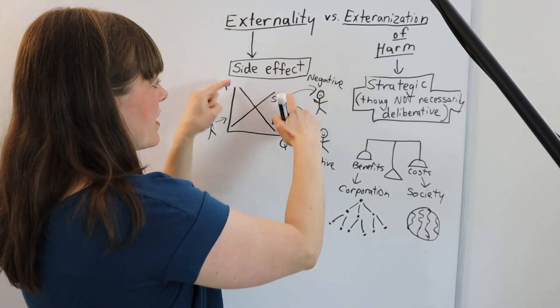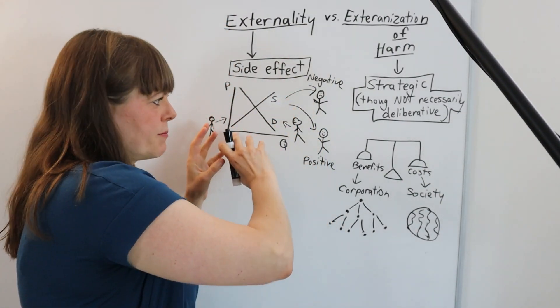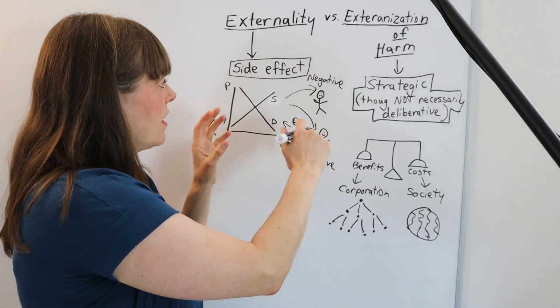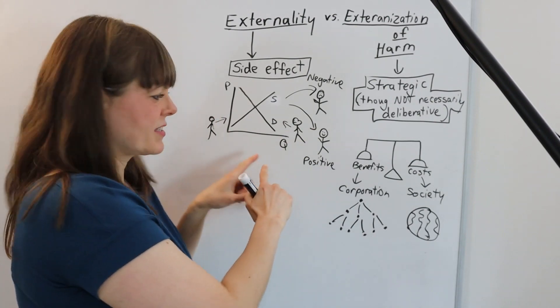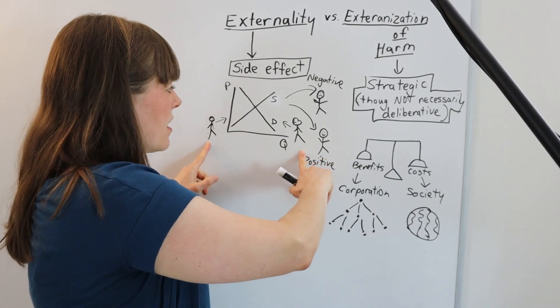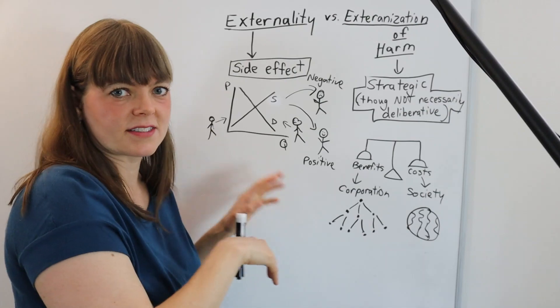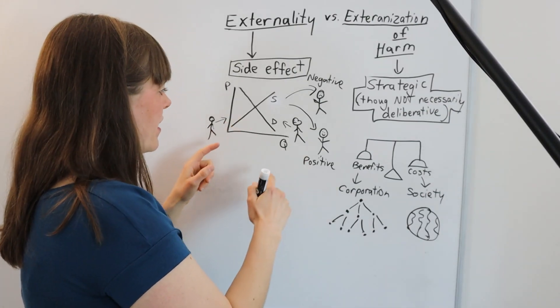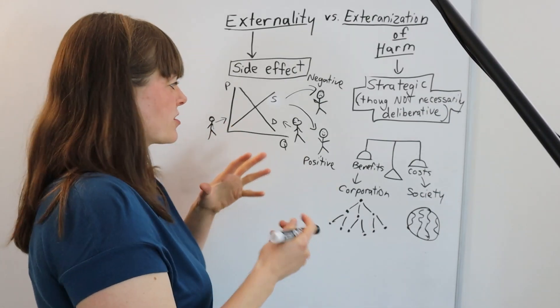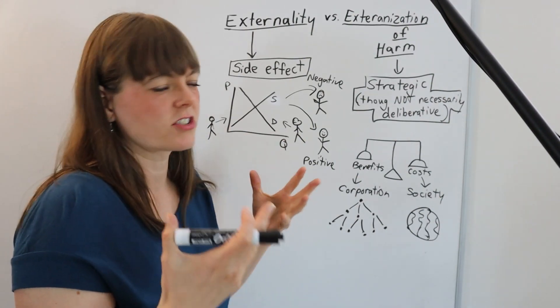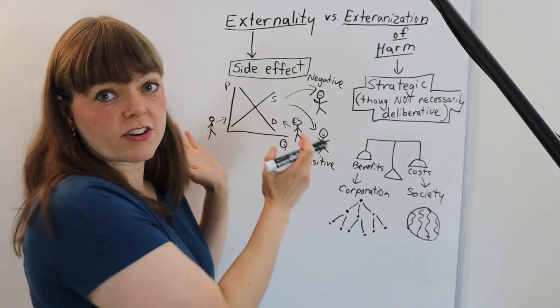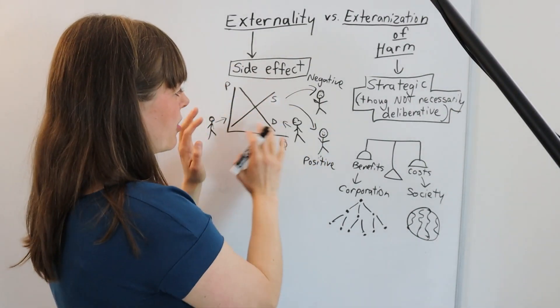So with externalities, the thing that's being imposed on somebody else is a side effect of the main event, and the main event basically has actors who are part of the decision. So like in a supply and demand situation in a market, the suppliers and the demanders both have a say, at least in the collective intelligence sense. Their decisions are playing in with how this market plays out.